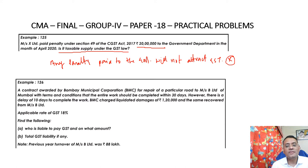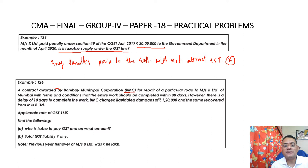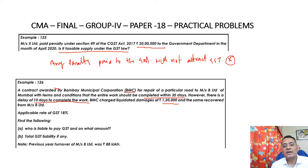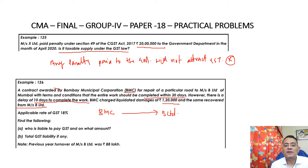Next problem: A contract was awarded by BMC, Bombay Municipal Corporation, for repair of a particular road to Measures B Limited of Mumbai, with the condition that the entire work should be completed within 30 days. However, there is a delay of 10 days to complete the work. BMC charges liquidated damages of Rs. 1,20,000 and the same is required from Measures B Limited. The question is whether GST applies.